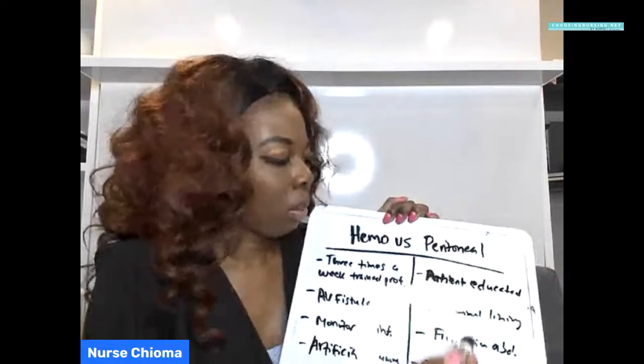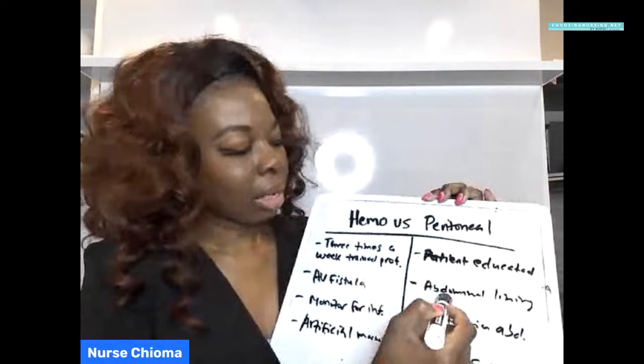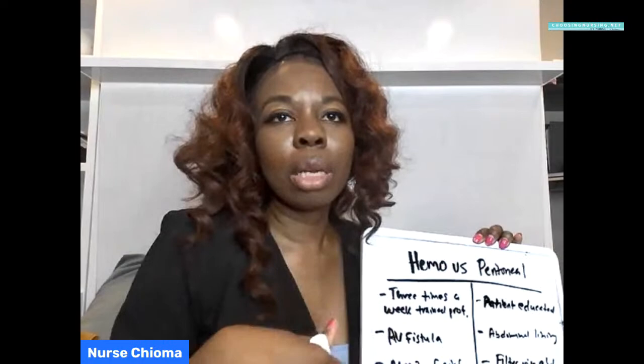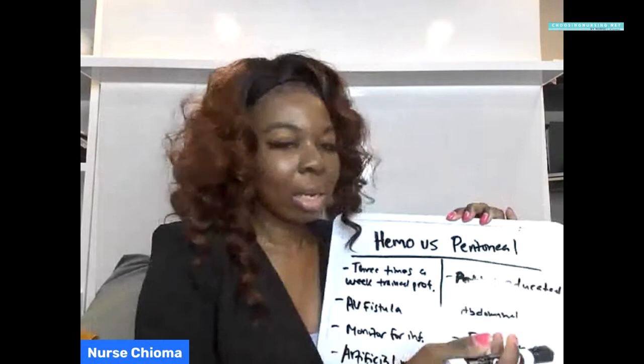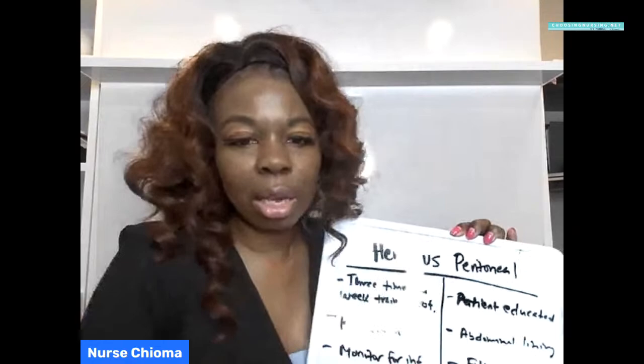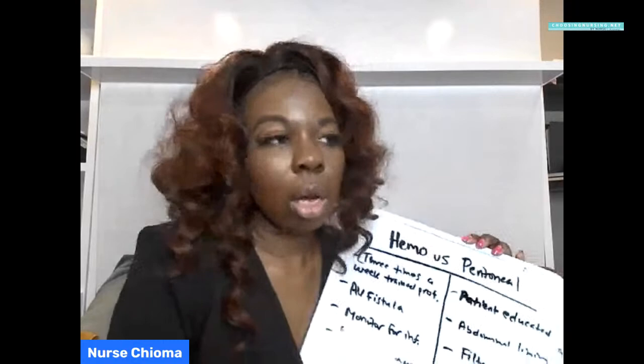Peritoneal dialysis is different. With peritoneal dialysis, there is no dialysis machine. Instead, they use the abdominal lining of the patient to filter the blood. A dialysate solution is used along with the abdominal lining to perform the filtration. A bag is involved and must be changed several times a day if it's continuous, or it can be automated — running only at night. The key difference is that peritoneal dialysis is typically ongoing or continuous, versus hemodialysis which is three times a week.